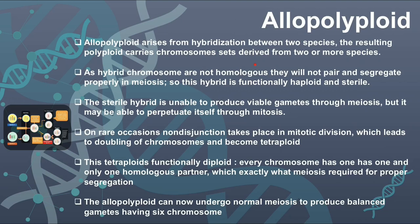Allopolyploidy arises from hybridization between two species. The resulting polyploid carries chromosome sets derived from two or more species. Since the hybrid chromosomes are not homologous, they cannot properly pair and segregate during meiosis. Therefore the hybrid is functionally haploid and sterile.